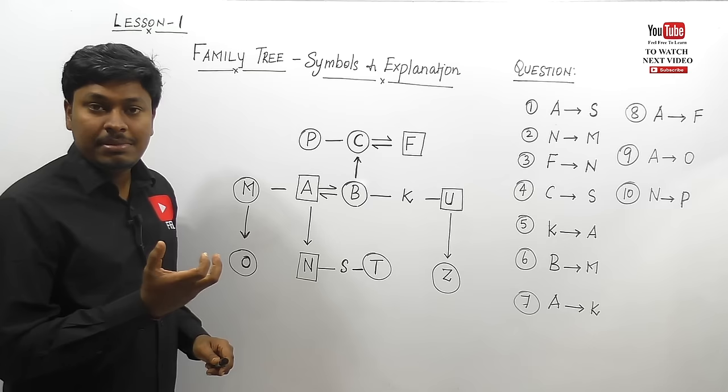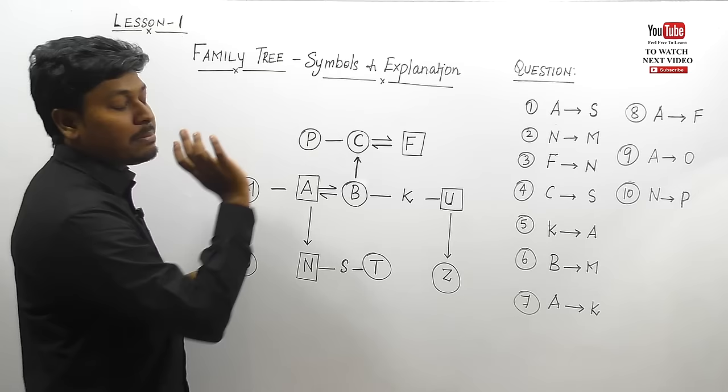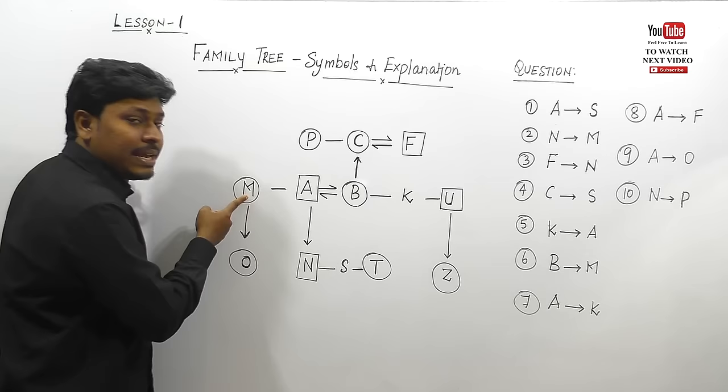Question 9: A to O — this is an interesting question where many students make mistakes, and it is repeated in many competitive exams. From A, we know A is having a sister M. M's daughter is O. So sister's daughter is called niece.